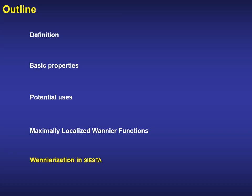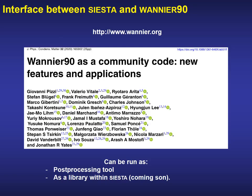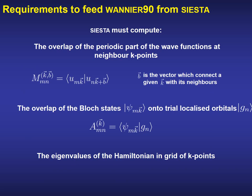So finally, how is the Wannierization done in SIESTA? We have implemented an interface between SIESTA and the Wannier90 code. Right now, Wannier90 can be run as a post-processing tool, but very soon its use as a library within SIESTA will be available in the master branch. In order to minimize the spreading and produce the maximally localized Wannier functions, Wannier90 requires some matrices that must be computed in SIESTA. Those matrices are: the overlap of the periodic part of the wave function at neighboring K points; the overlap of the Bloch states onto a trial set of localized orbitals used as a starting point for the minimization procedure; and the eigenvalues of the Hamiltonian on a grid of K points.